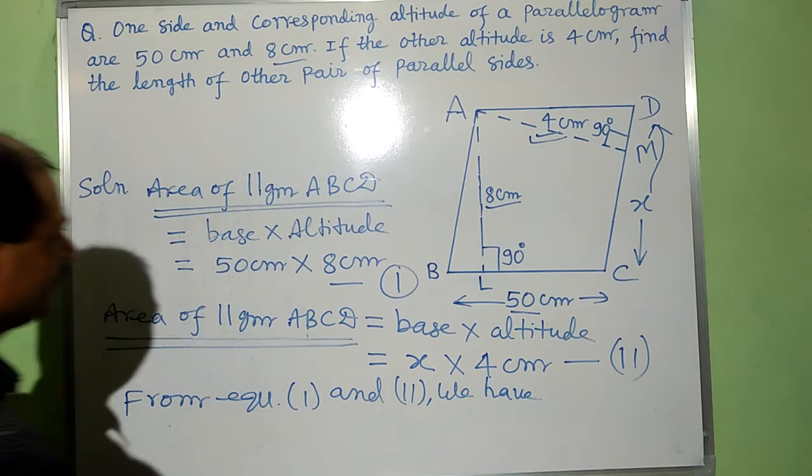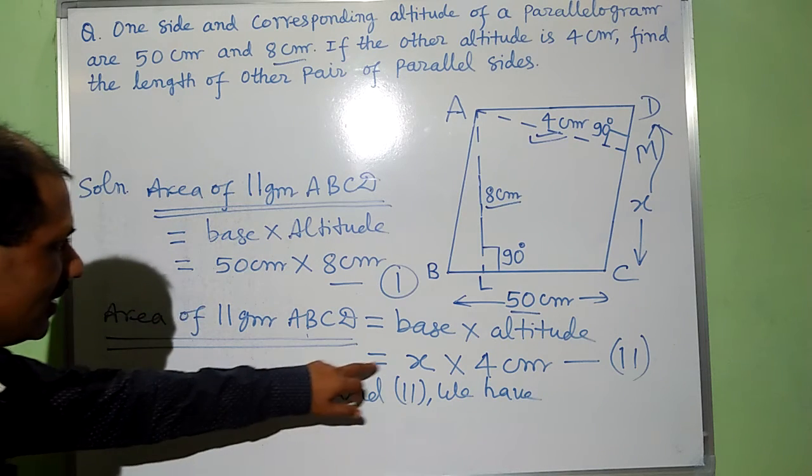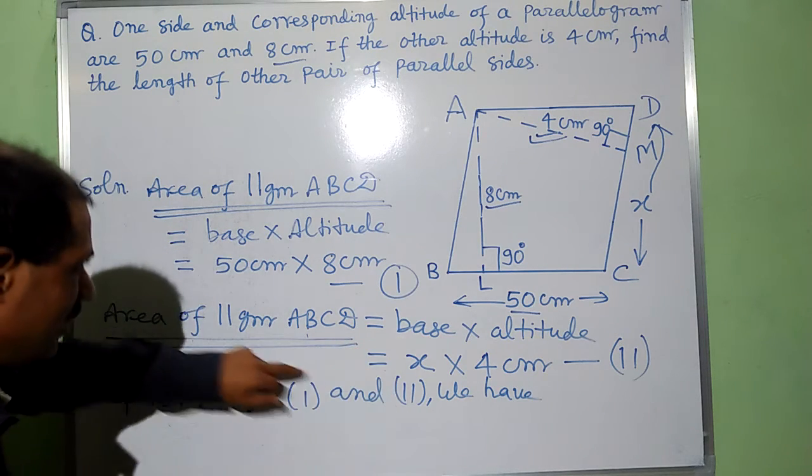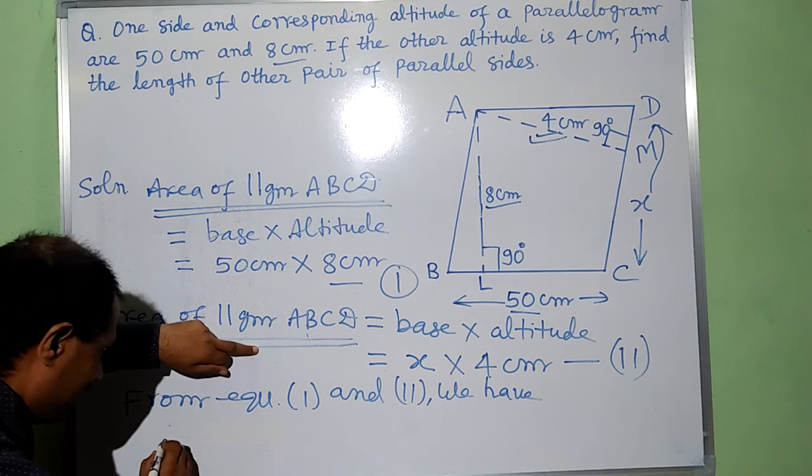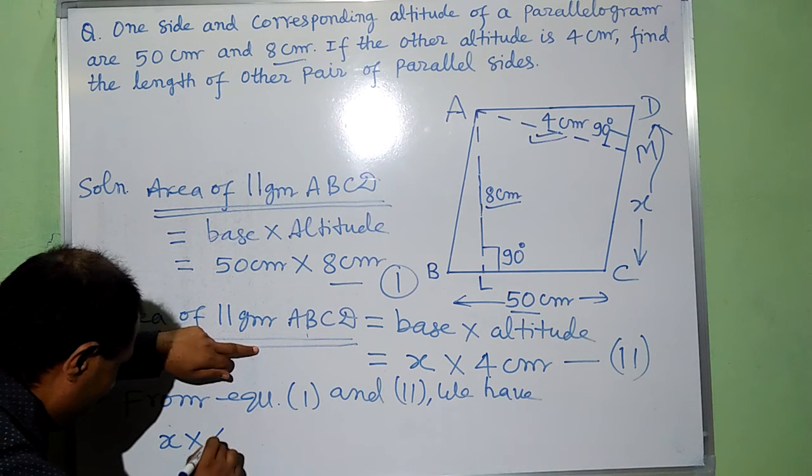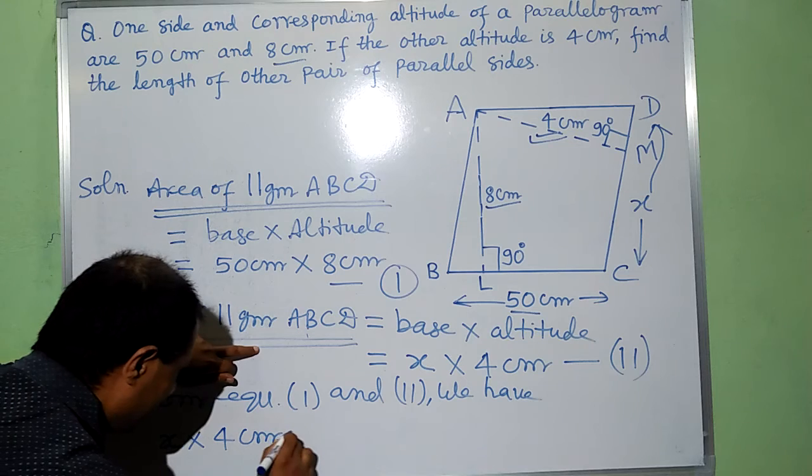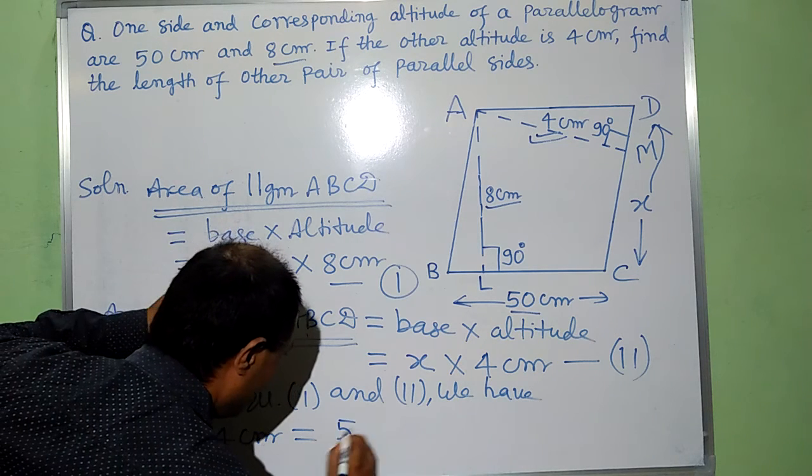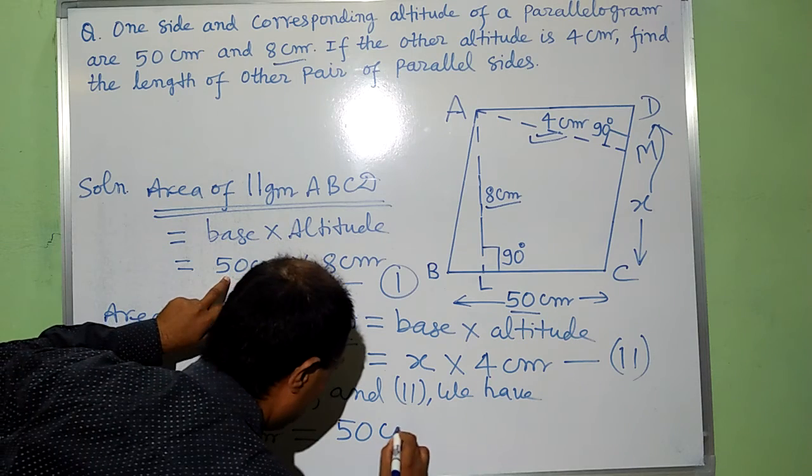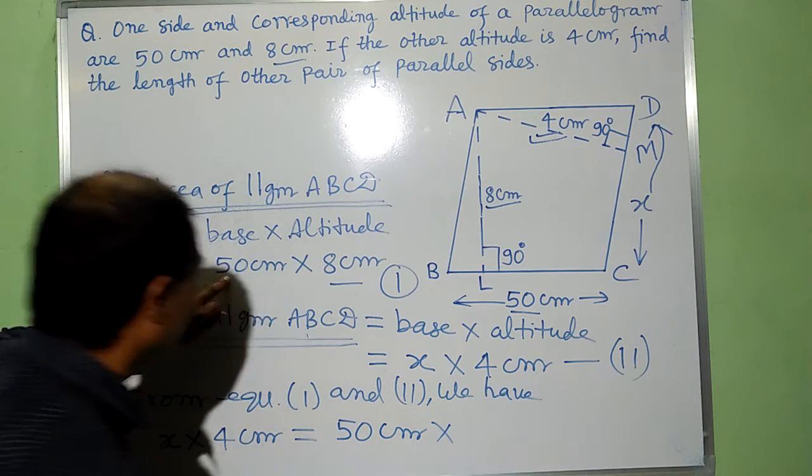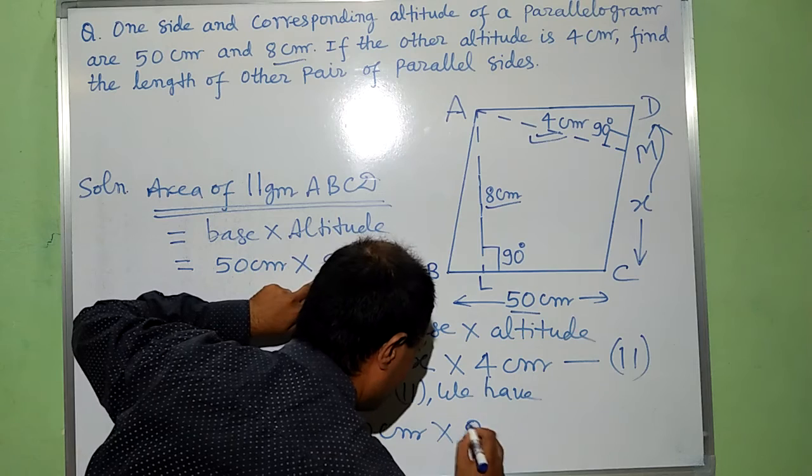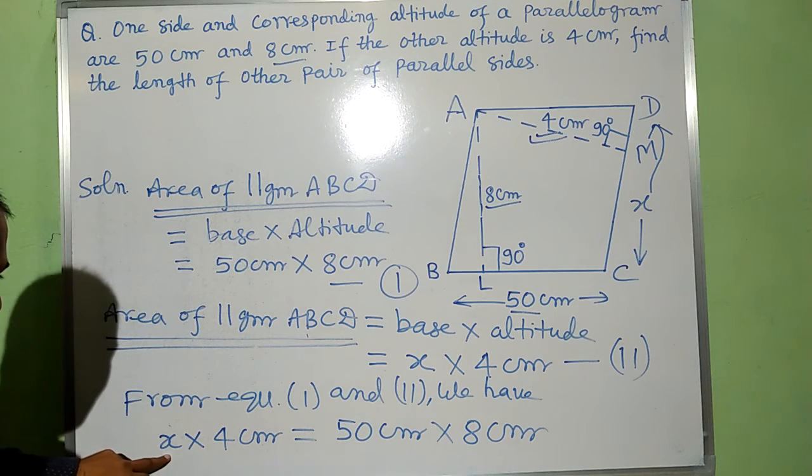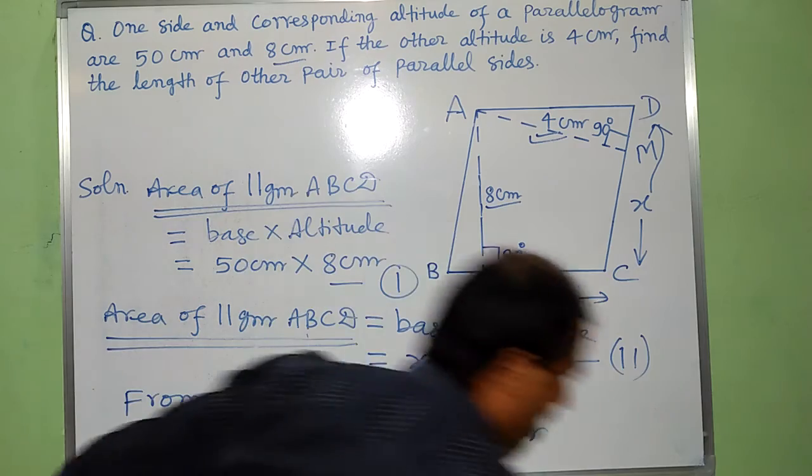this area X into 4 cm will be equal to 50 cm into 8 cm. There is one variable X, we can find its value.